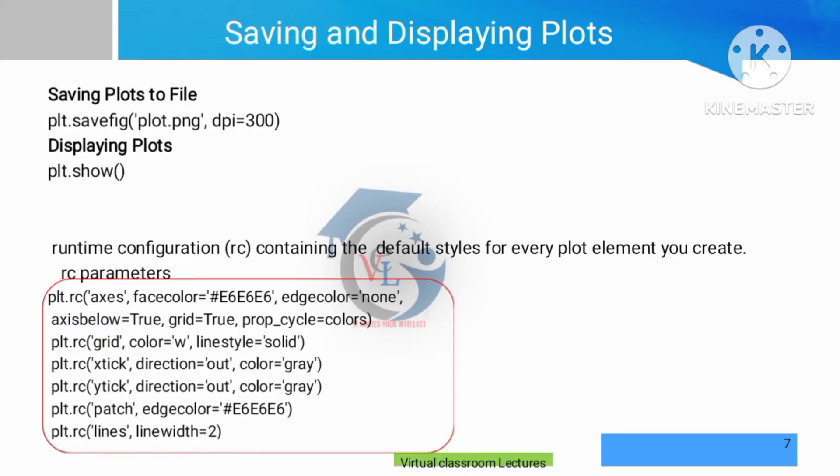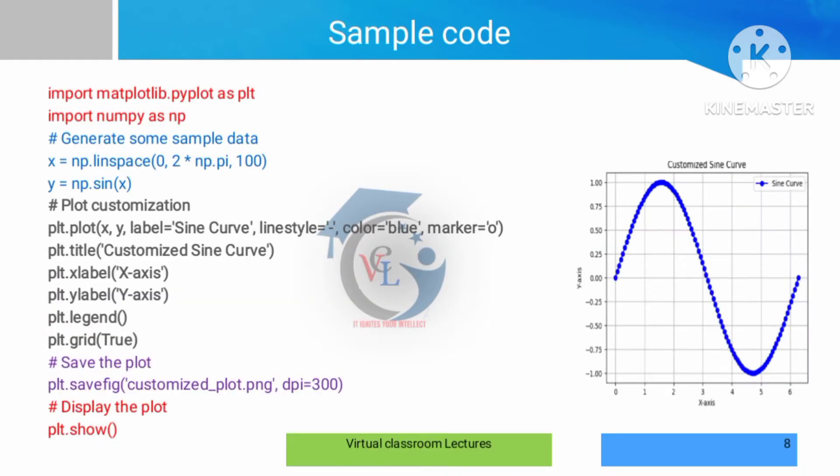We can also see additional axis properties such as face color (the background color of the axis), edge color (the border color), and next, grid color. These are all part of the customization options available in matplotlib.